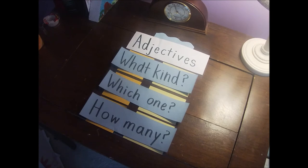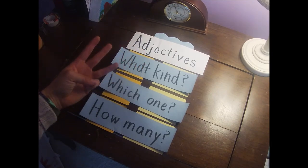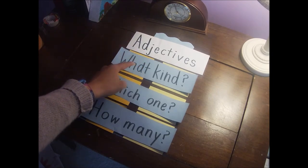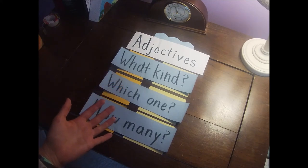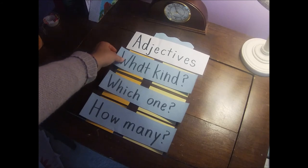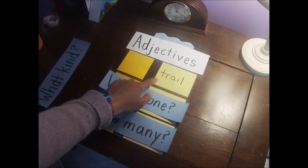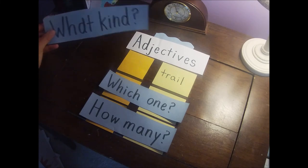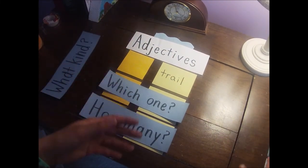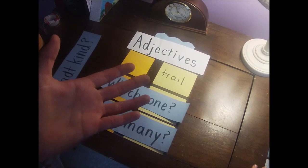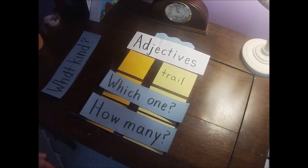Now let's practice on our own. Remember, adjectives ask three questions: what kind, which one, and how many. The first one is 'trail.' What kind of trail? Do you want it to be a short trail or a long trail? Let's put 'long trail.'